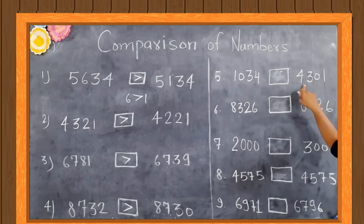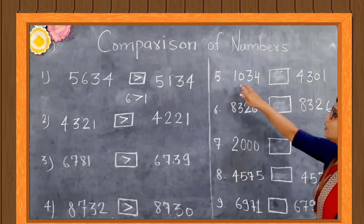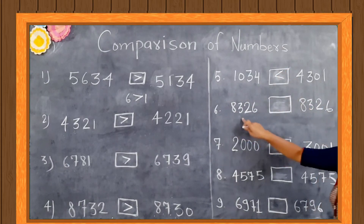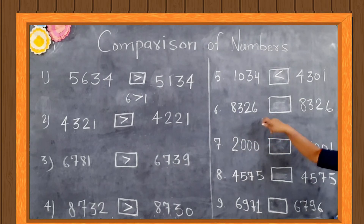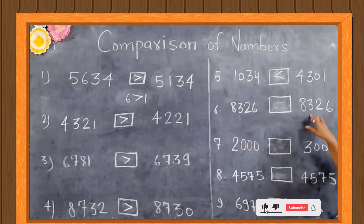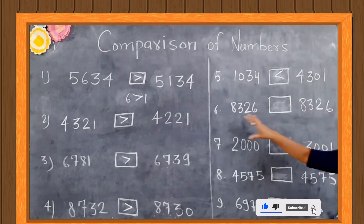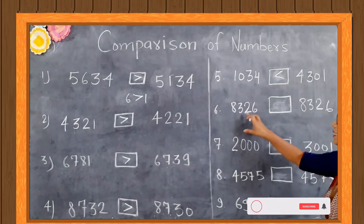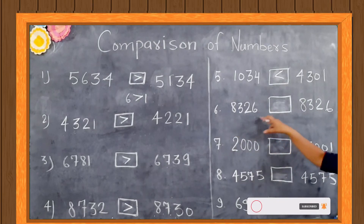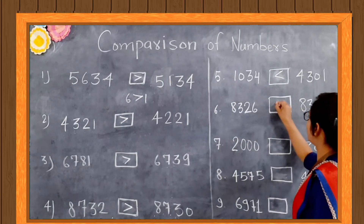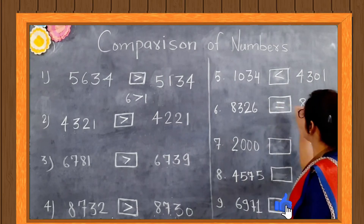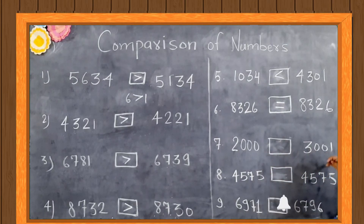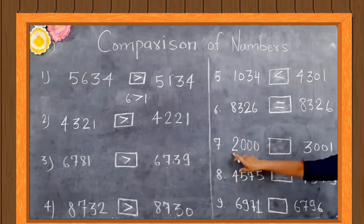Now 1,034 and 4,301. Here the 1000 place digits are 1 and 4, so 4,301 is bigger than 1,034. Now 8,326 and 8,326. This number is equal — the 1000 place, 100 place, 10 place, and 1 place are all the same, so we use the equal sign.